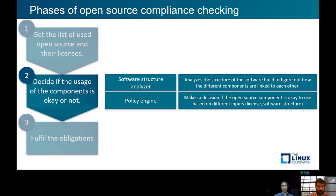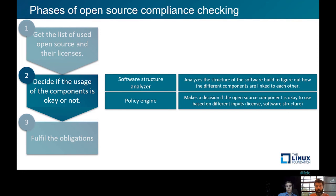In step two, which is a bit simpler, we need to decide if the usage of the open source project is acceptable. For this we need basically two things. First, a software structure analyzer to get information about how the open source software communicates with other parts of the software, because some licenses have different obligations for open source software statically linked versus dynamically linked to other software.